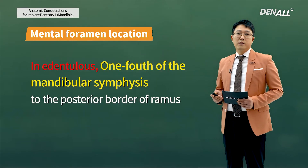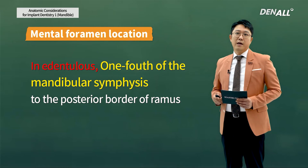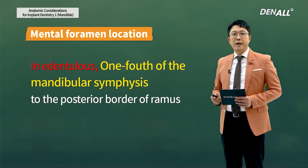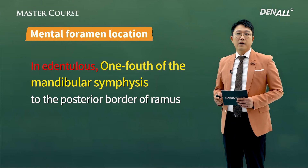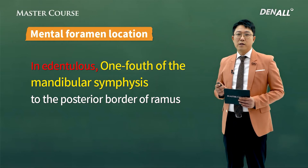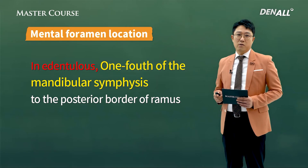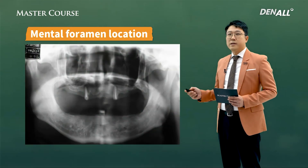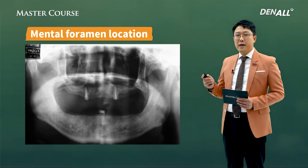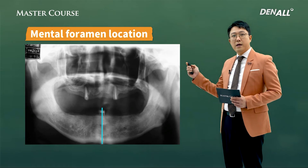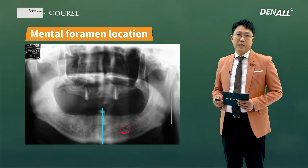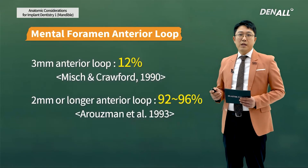In edentulous cases, if the location is not clearly shown on the x-ray, it can be confusing. In edentulous cases, it is located at one-fourth of the distance from the mandibular symphysis to the posterior border of the ramus on the panoramic x-ray. The mental foramen has an anterior loop.